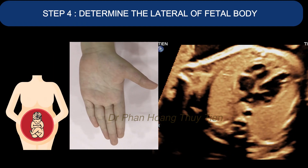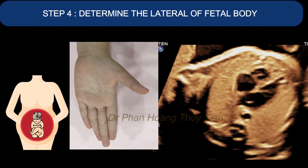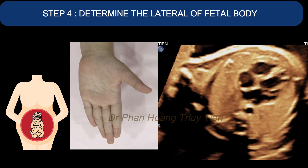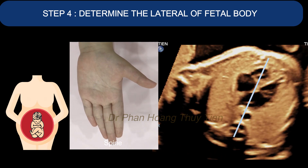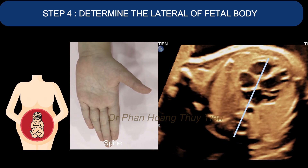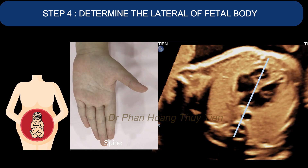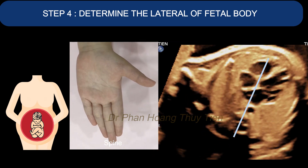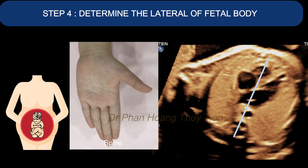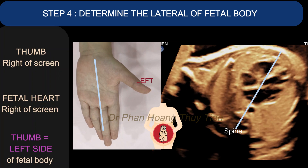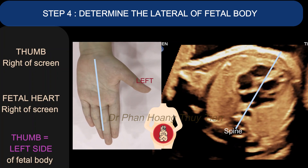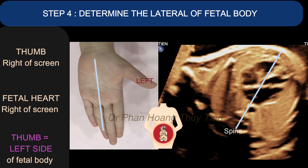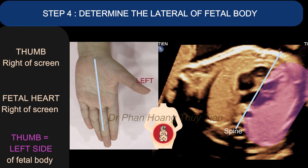Step 4: Determine the laterality of the fetal body. With the transverse view, you will need to create a straight line from the spine that divides the fetal body into half. Then you apply the technique from the previous step.